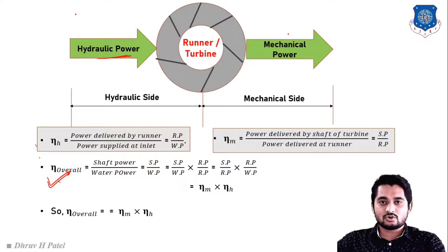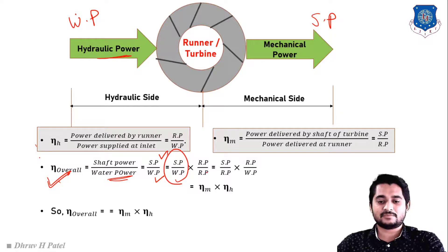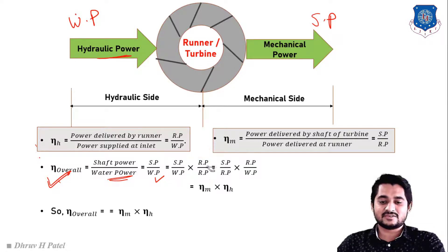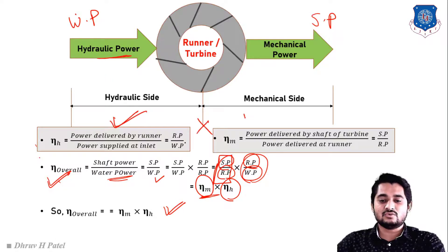Overall efficiency considers the entire turbine assembly: output is shaft power and input is water power, so overall efficiency = shaft power / water power. If we multiply and divide by runner power and rearrange, we get: overall efficiency = mechanical efficiency × hydraulic efficiency.